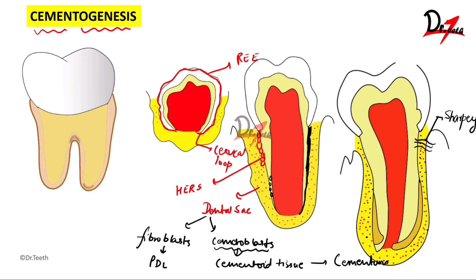There are two types of cementum: acellular cementum and cellular cementum. Acellular cementum forms first and is deposited towards the cervical third of the root. Cellular cementum is deposited after the tooth reaches the occlusal plane and is mostly deposited in the apical aspect.